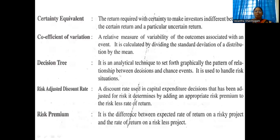Before going through the different methods, let me explain the meaning of each term. Certainty equivalent is the return required with certainty to make the investor indifferent between a certain return and a particular uncertain return — differentiating what percentage or probability of getting our return is certain versus uncertain. Coefficient of variation is the risk associated or standard deviation — how much deviation has happened from the mean. It is a relative measure of variability of outcomes, calculated by dividing the standard deviation of a distribution by its mean.